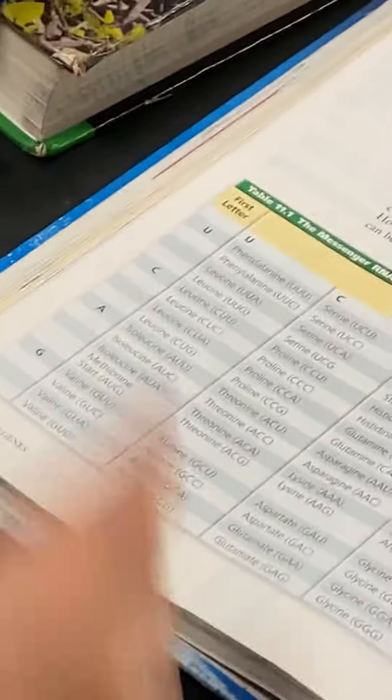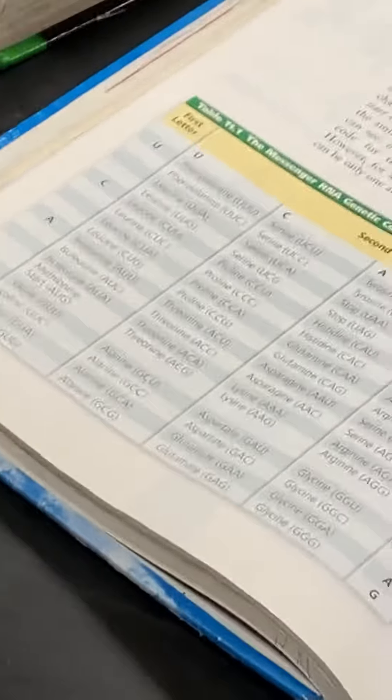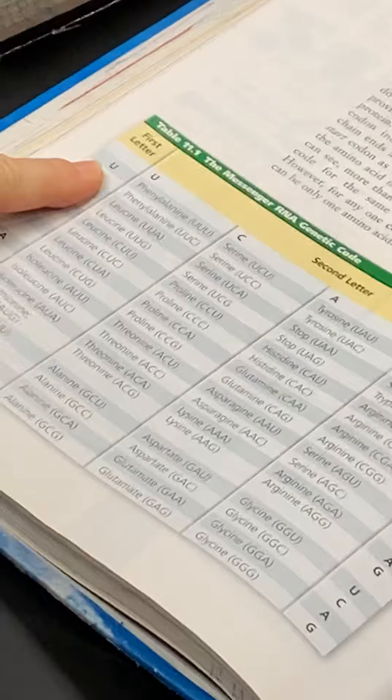Let's say the next one is... hang on just a minute. Glutamine. Okay, let's use U-A-G. First letter is U. Second letter is A.